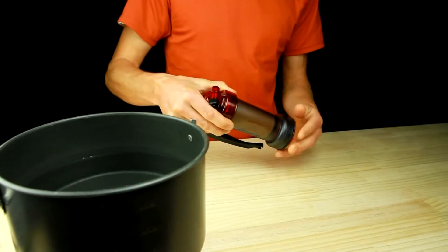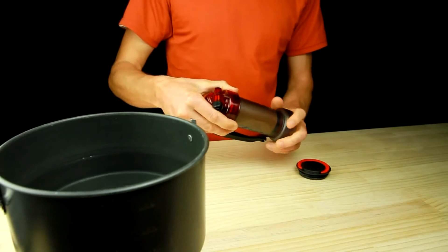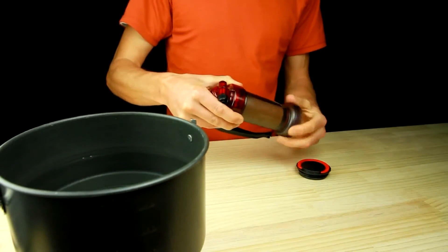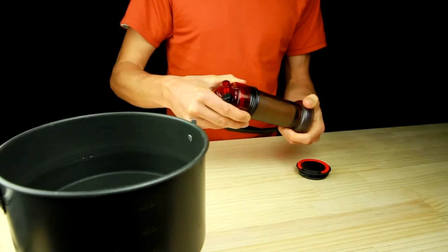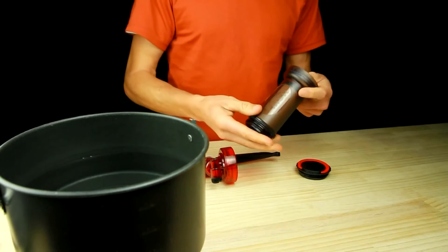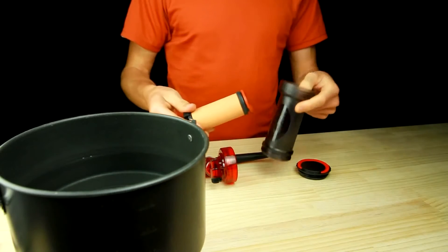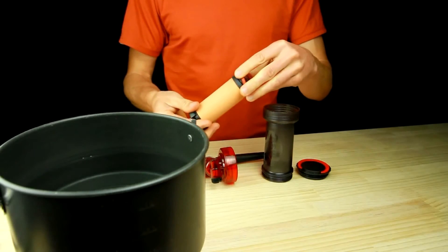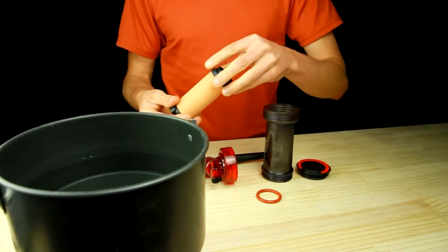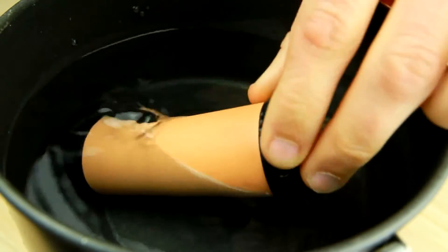If the MiniWorks EX Microfilter has been used for more than a week straight or is going into or coming out of long term storage, then the ceramic element should be sterilized. Remove the ceramic element and take off the lower end cap O-ring. Place the ceramic element into a large pot of room temperature water.